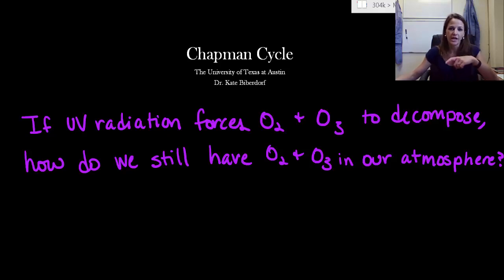If UV radiation is strong enough or high enough energy to break apart oxygen and ozone, forcing them to decompose, how is it possible that we still have oxygen and ozone left over in our atmosphere to protect us from these harmful rays?